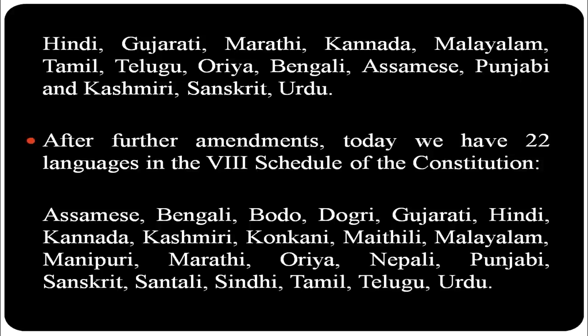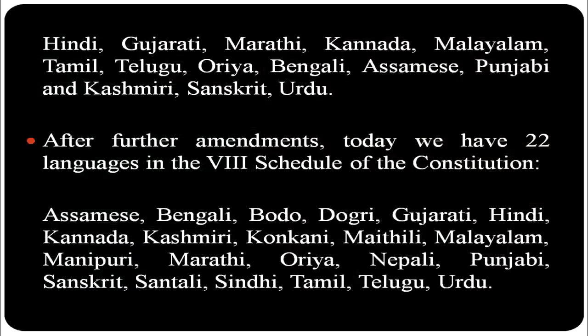There have been several amendments since then — four more languages were added after 1967, and another four were added in 2003. After all amendments, we now have 22 languages in the Eighth Schedule: Assamese, Bengali, Bodo, Dogri, Gujarati, Hindi, Kannada, Kashmiri, Konkani, Maithili, Malayalam, Manipuri, Marathi, Odia, Nepali, Punjabi, Sanskrit, Santali, Sindhi, Tamil, Telugu, and Urdu.